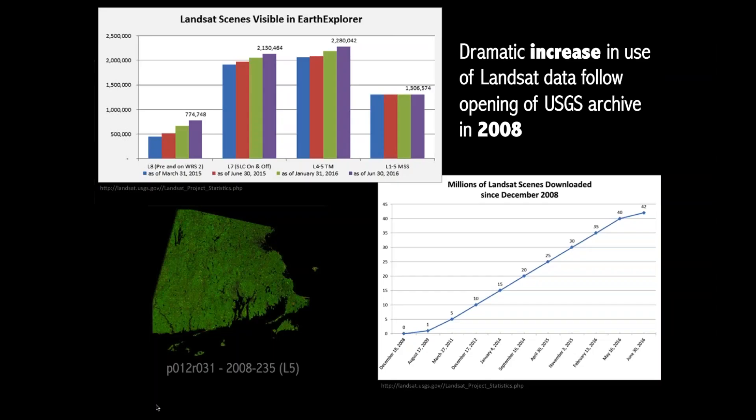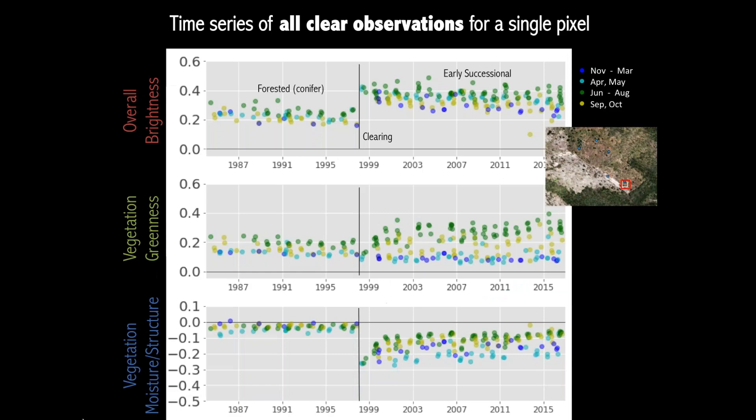Prior to 2008, Landsat imagery was pay-per-use, with each image costing anywhere from hundreds to thousands of dollars. In 2008, the USGS changed its data distribution policy and made all available Landsat imagery free for public download. Since the opening of the archive, we've seen skyrocketing use of Landsat imagery. This has allowed us to use every good Landsat observation for individual pixels — pulling for one 30 by 30 meter square every observation not obstructed by a cloud, shadow, or snow — and looking at it as a time series.